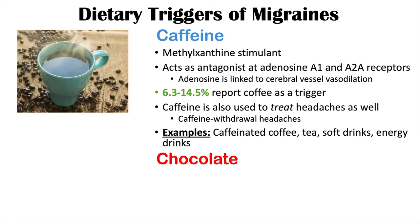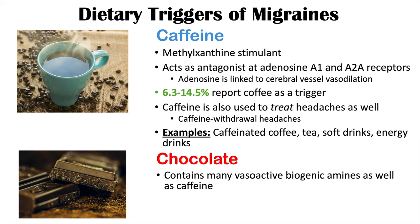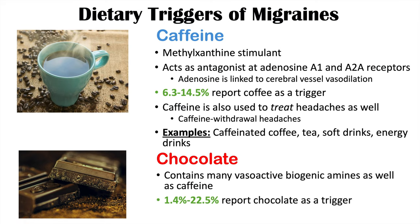Another related dietary trigger is chocolate. Chocolate contains many vasoactive biogenic amines as well as caffeine. These vasoactive biogenic amines may potentially lead to cerebral vessel vasodilation. Between 1.4% and 22.5% of individuals report chocolate as a trigger of migraines, showing quite a bit of variation.